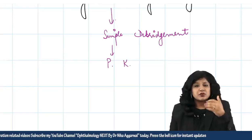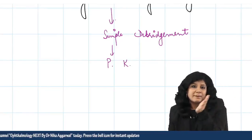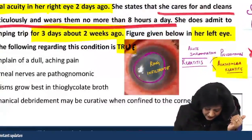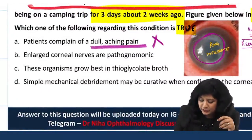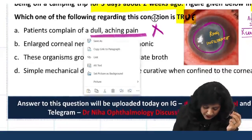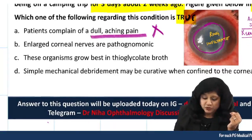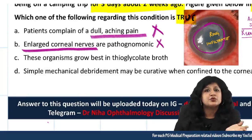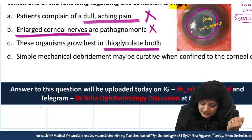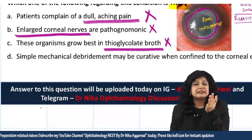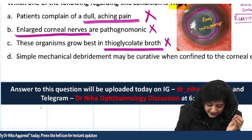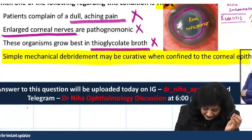Coming back to the options: Option 1 — patient complains of dull aching pain — absolutely wrong. Pain in Acanthamoeba is out of proportion to the ulcer size, not dull. Option 2 — enlarged corneal nerves are pathognomonic — wrong. You do get enlarged nerves due to radial keratoneuritis, but it is not pathognomonic. Option 3 — organisms grow best in thioglycolate broth — wrong. They grow on non-nutrient agar enriched with E. coli. So by exclusion, the answer is Option 4.